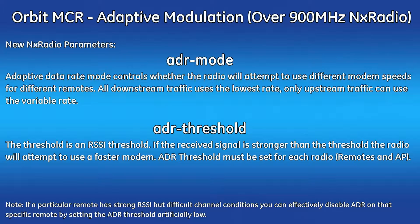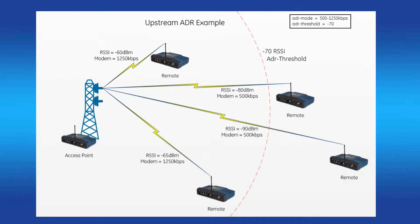ADR threshold is the RSSI threshold used to determine if the radio operates at the faster or slower modem speed. For example, if the ADR threshold is set to -70 and four remotes are set up for ADR mode 500 to 1250 kbps: two remotes with a weak signal below -70 will operate at 500 kbps, and two remotes with a strong signal above -70 will operate at 1250 kbps.